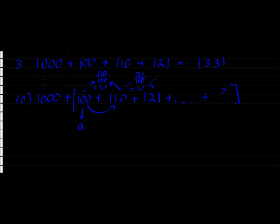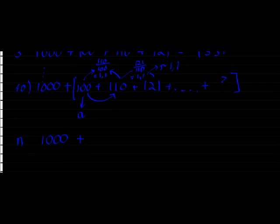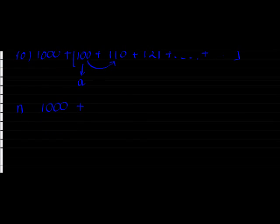Which means that my investment after N years will be my 1,000, plus, and now it's the sum of a geometric sequence. Can you remember that? The sum of the geometric sequence, A times 1 minus R to the power of N, divided by 1 minus R.